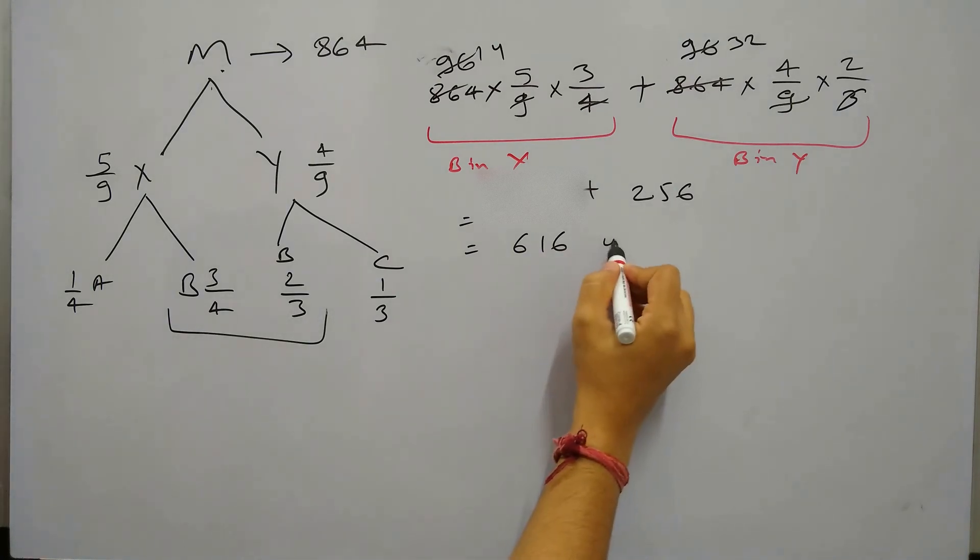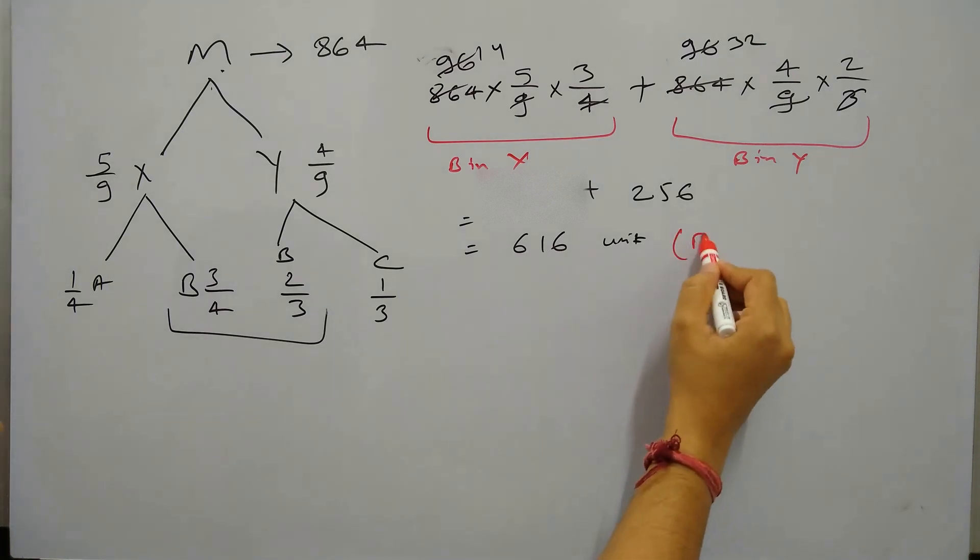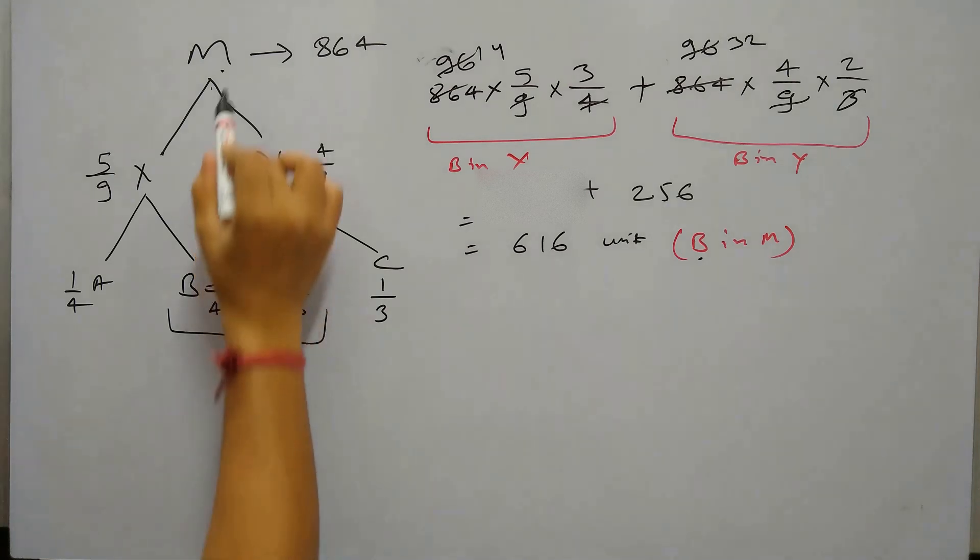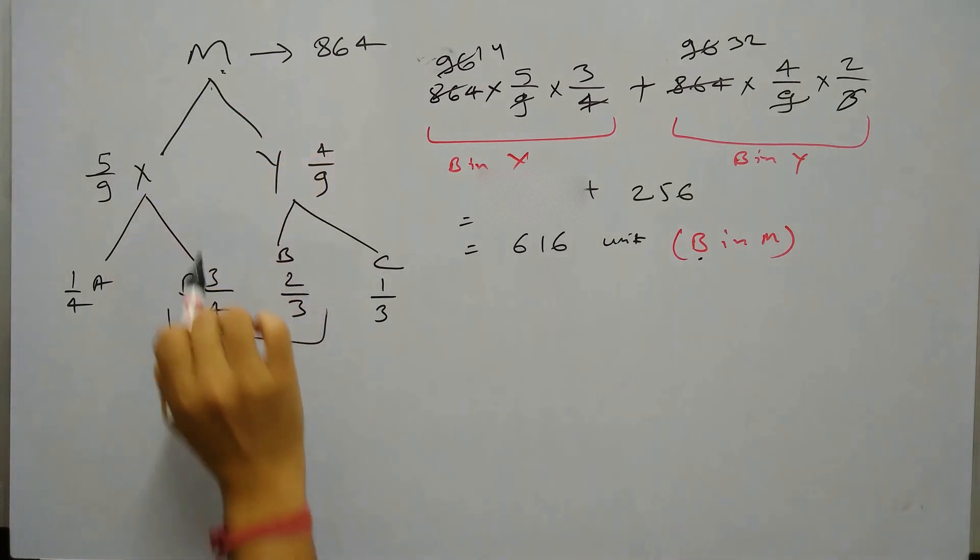So 616 unit is B. So total B in M. This is 616 is the absolute value of B in M. So now in the final mixture where M and water are added.